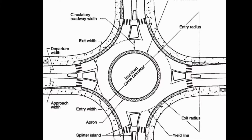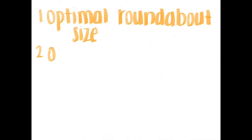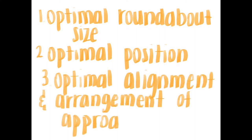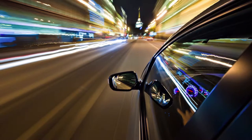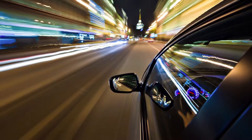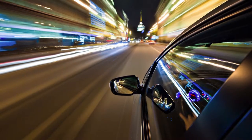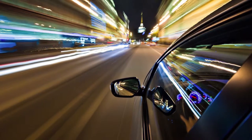However, before the measurements and details of these values are defined, there are three fundamental elements that must first be determined in the preliminary design stage: the optimal roundabout size, the optimal position, and the optimal alignment and arrangement of approach lanes. One of the most critical objectives is designing for an appropriate design speed that will reduce the relative speeds between conflicting traffic streams. These speeds will be reduced by requiring vehicles to negotiate the roundabout along a curved path.